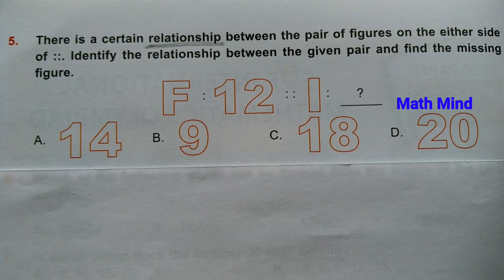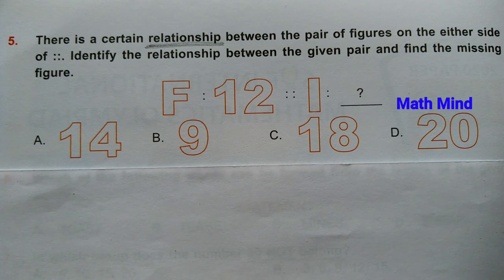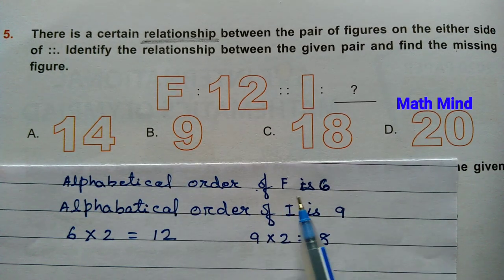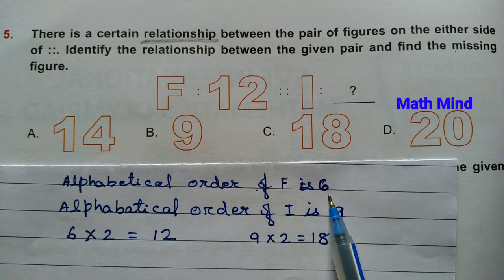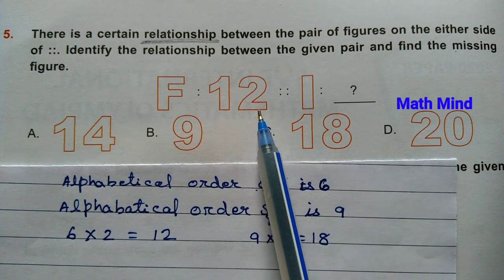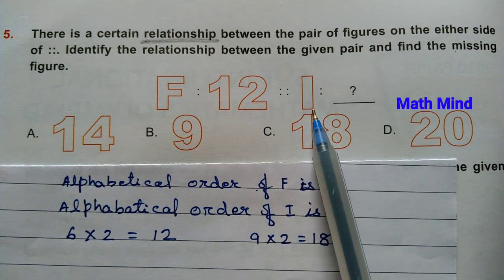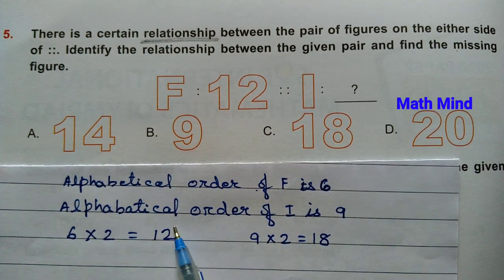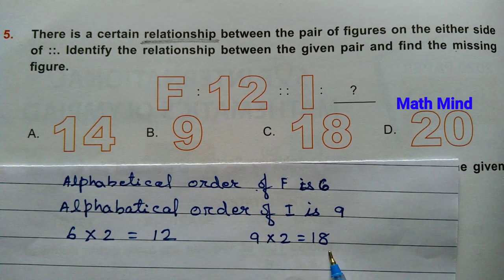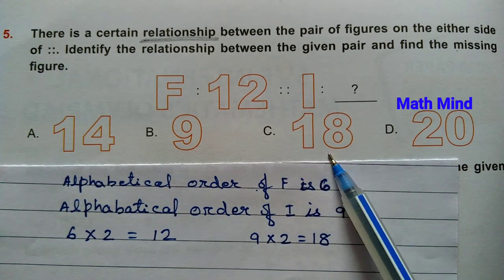Question number 5: There is a certain relationship between the pair of figures on either side. Identify the relationship and find the missing figure. This is F; the alphabet order of F is 6. So 6 into 2 equals 12. Following the same pattern, this is I; the alphabet order of I is 9. So 9 into 2 equals 18. Option C is correct: 18.